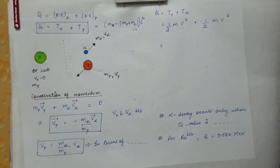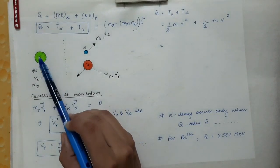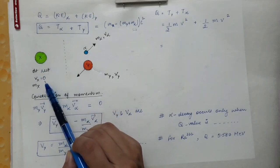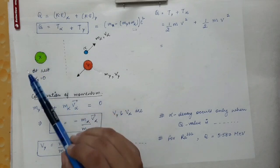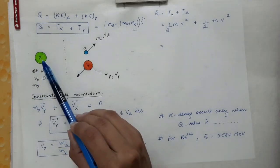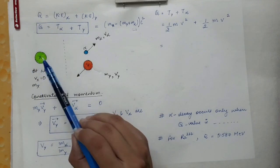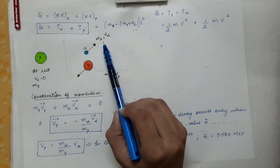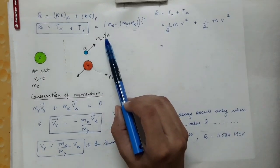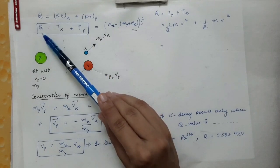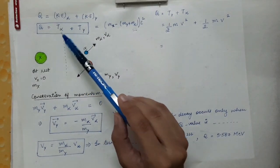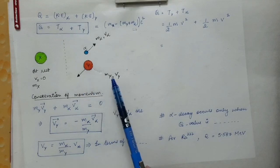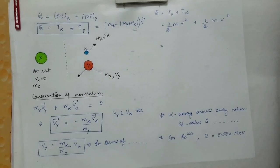In this diagram, the parent nucleus X is initially at rest, so its velocity is zero and its mass is M_X. When alpha decay occurs, the parent nucleus decays into the daughter nucleus Y with mass M_Y and velocity V_Y, and an alpha particle with mass M_alpha and velocity V_alpha is released.